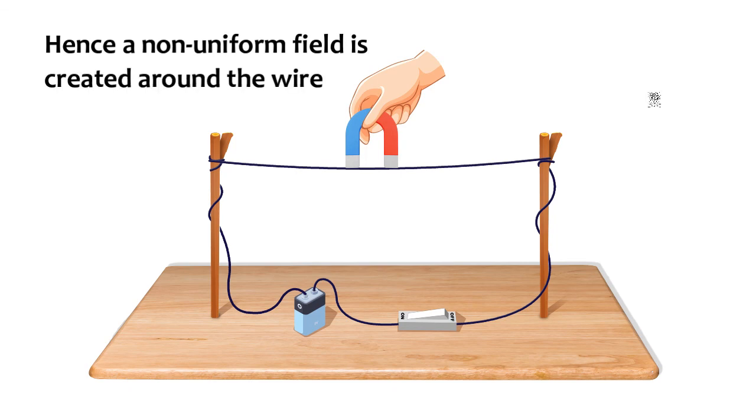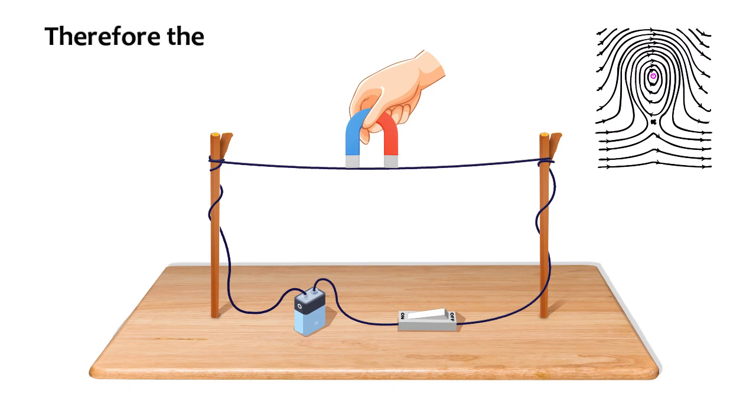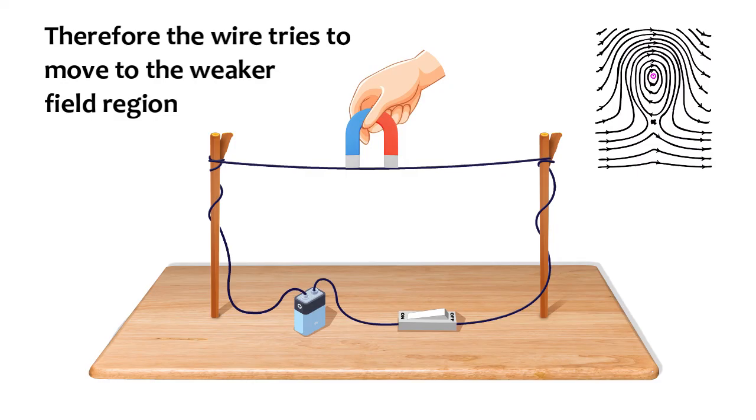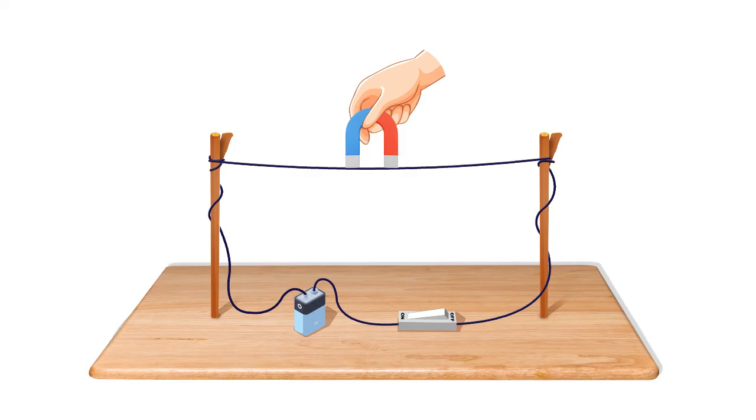Hence, a non-uniform field is created around the wire. Therefore, the wire tries to move to the weaker field region.